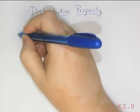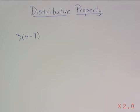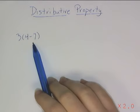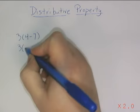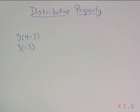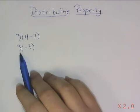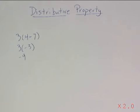Remember, if we were to see a problem like this, order of operations, or GEMS, reminds us that we should start with our grouping symbol first. 4 minus 7 would get evaluated to give us negative 3. Then we could work our way down to the multiplication. 3 times negative 3 gives us negative 9. And if that's all we have to do, that works pretty well.